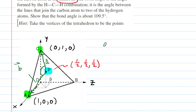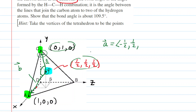We can start with vector A. Vector A is going from point P to point C. Recall that to get the vector representation, you simply subtract the x, y, z coordinates of the two points — starting from the termination of the vector and then minus the origin of the vector, which is point P. For the x, we have 0 minus 1/2, which is negative 1/2. For the y, we have 1 minus 1/2, which is 1/2. And for the z, we have 0 minus 1/2, which is negative 1/2. So vector A = (−1/2, 1/2, −1/2).